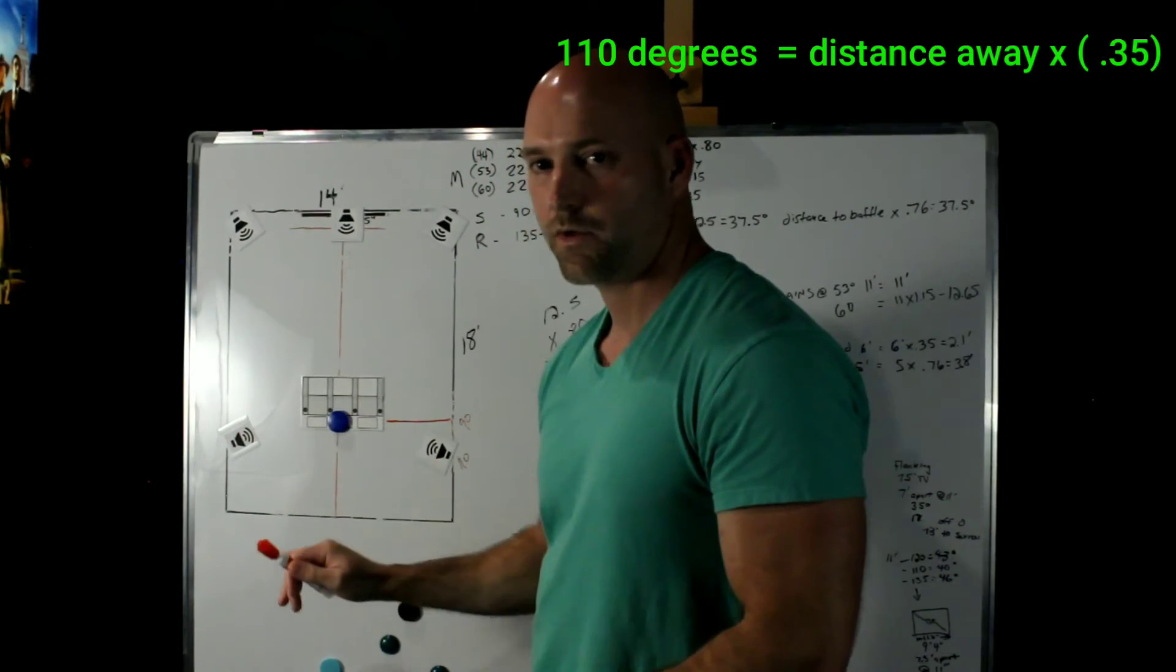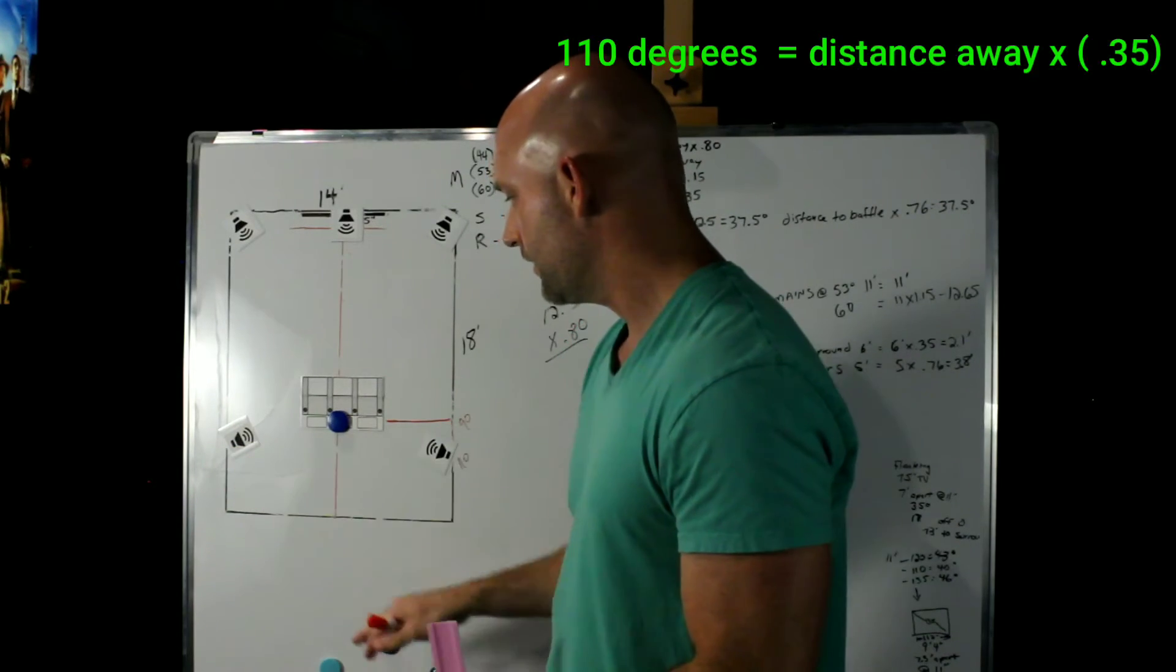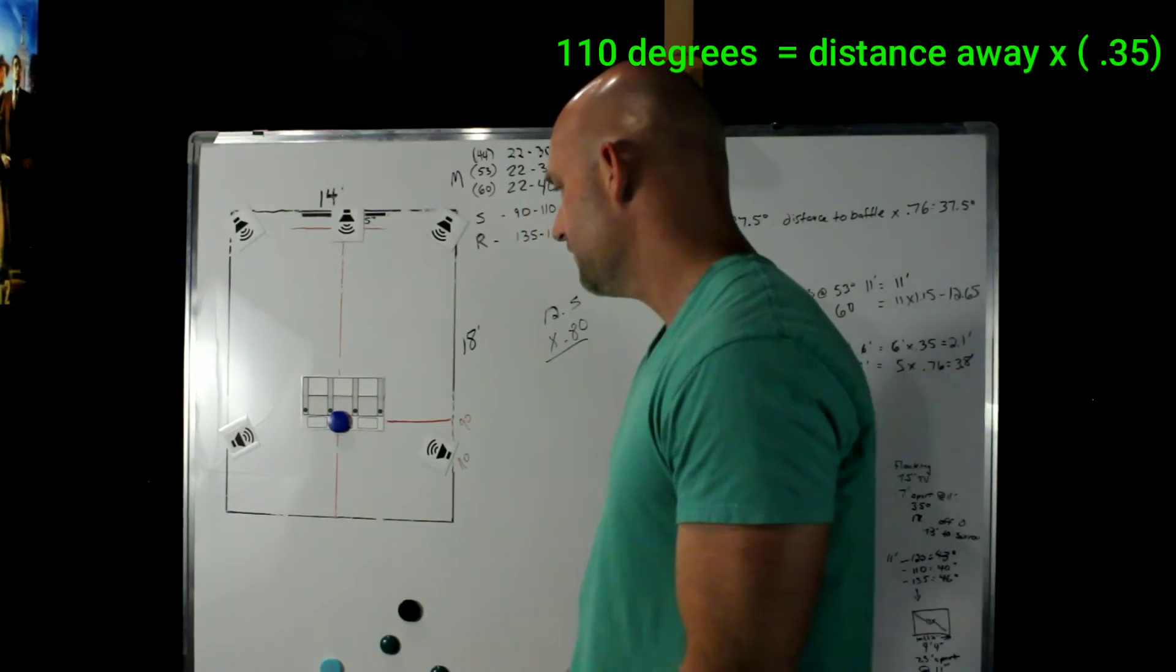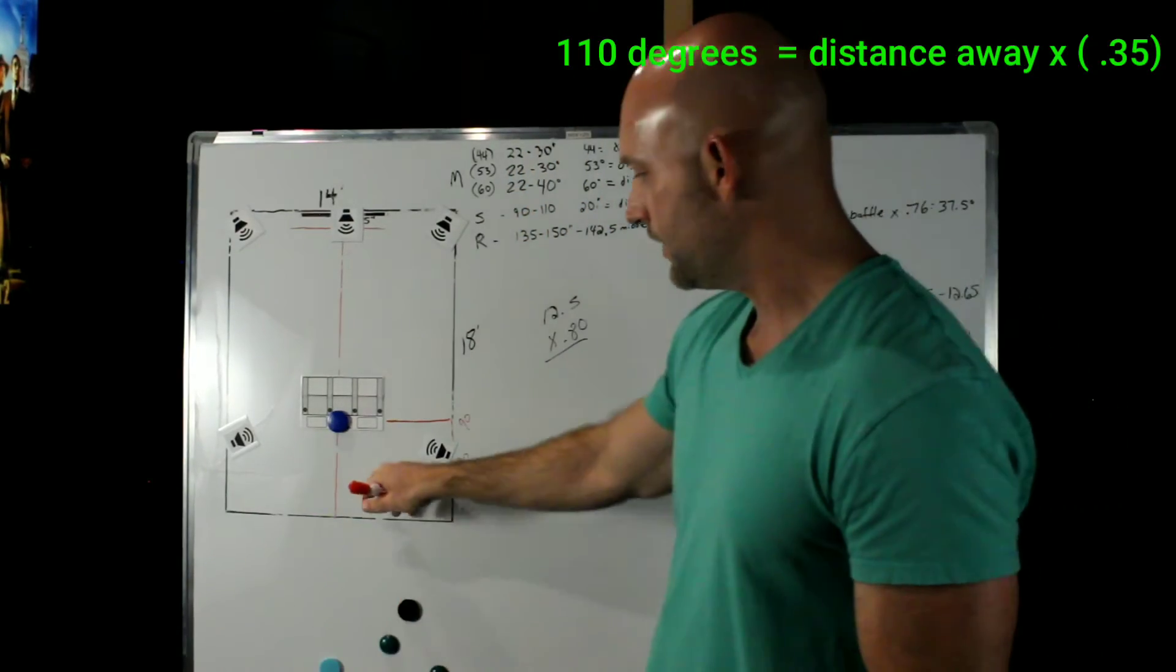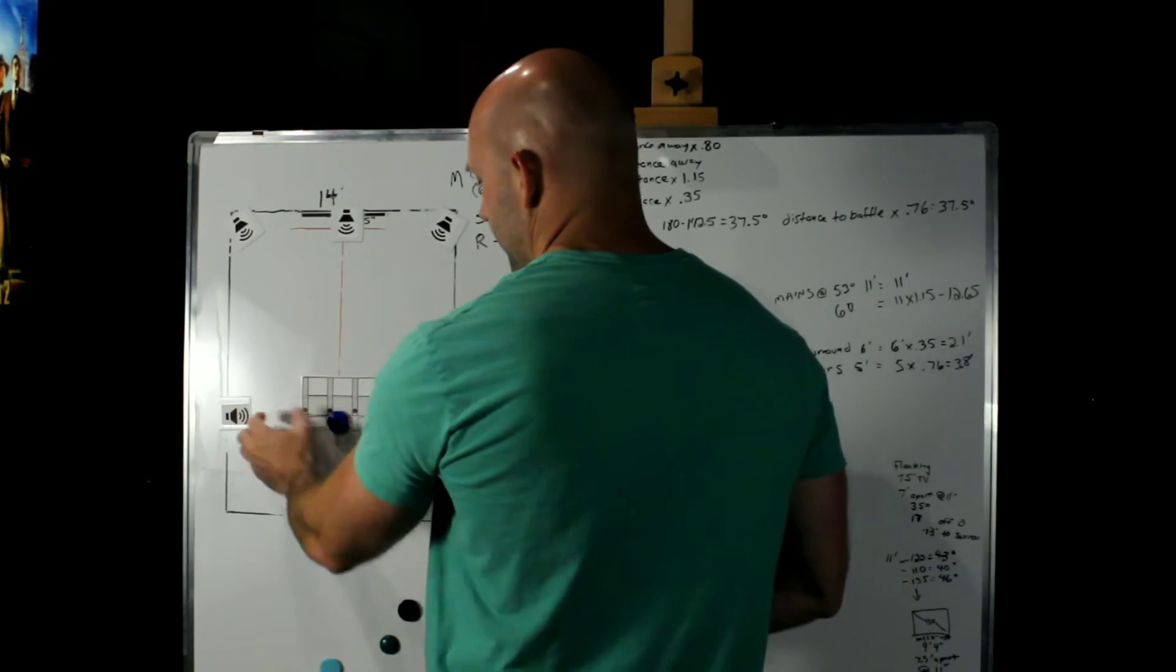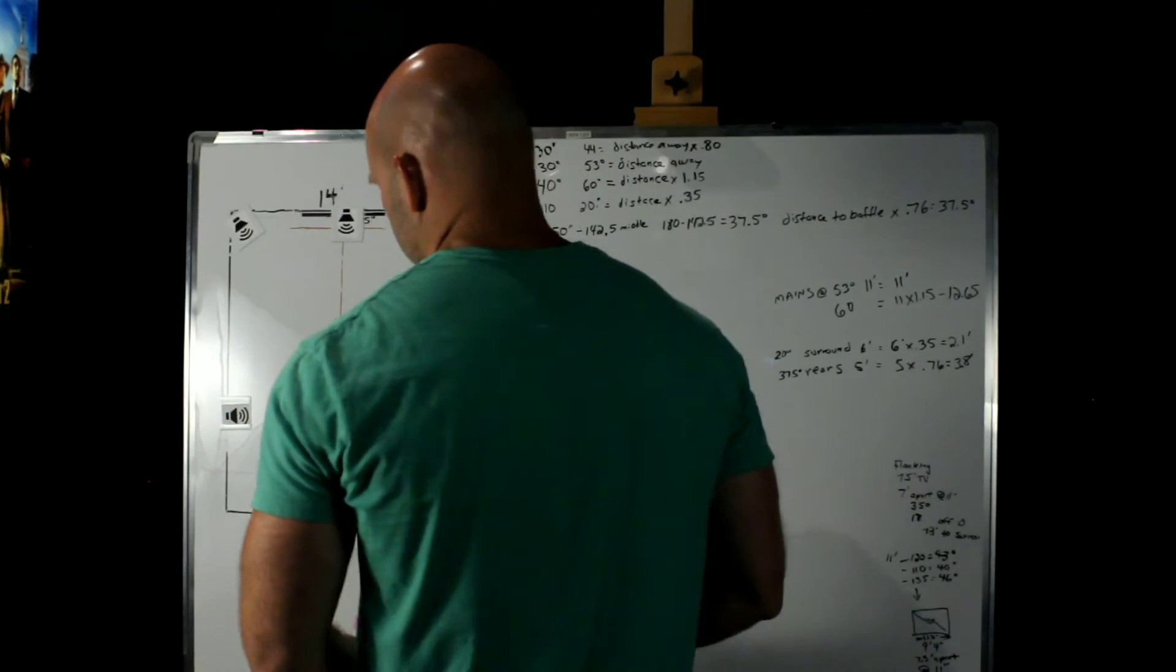If you've got something behind you, it's going to be mixed in both of these surrounds to try to pull the object behind the couch. Pulling these back right here is going to help do that. It's going to help give a more convincing, believable feel like there's something actually back here. And if they were over here at 90 degrees in a 5.1, it just wouldn't be the same. That's why they're pulled back a little bit.